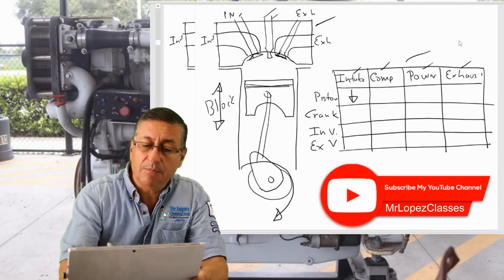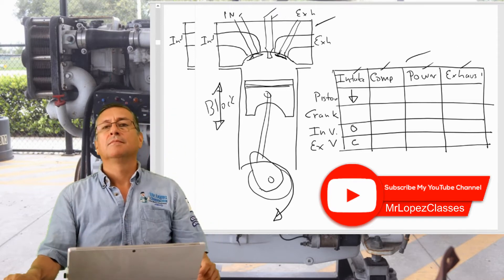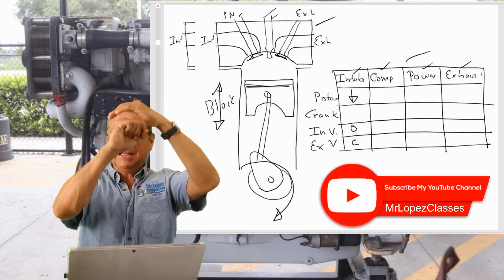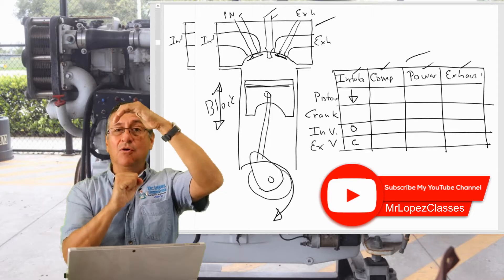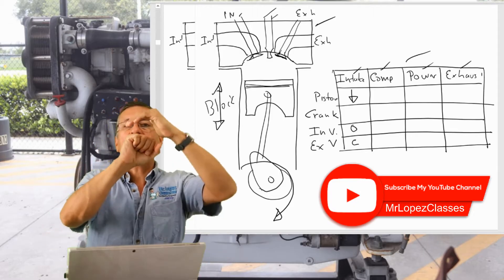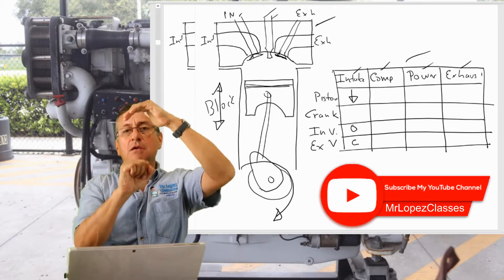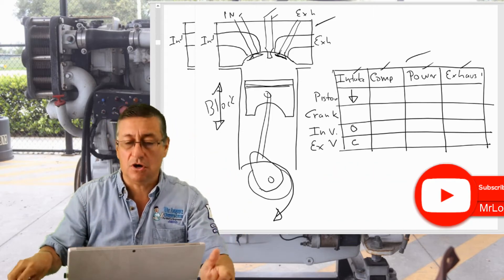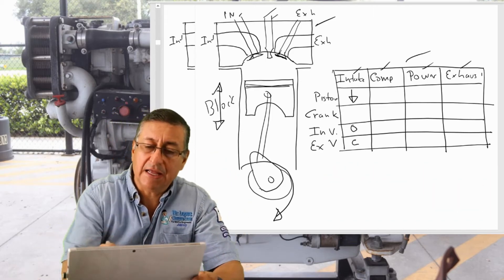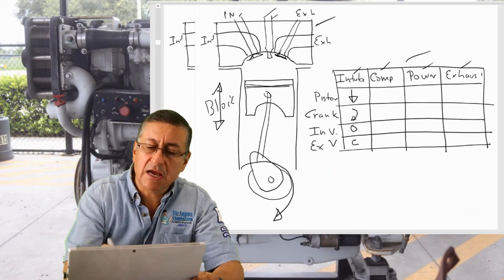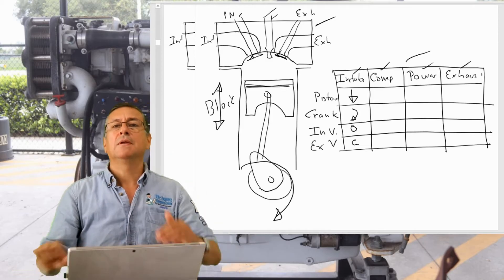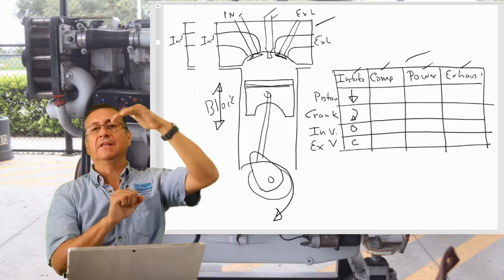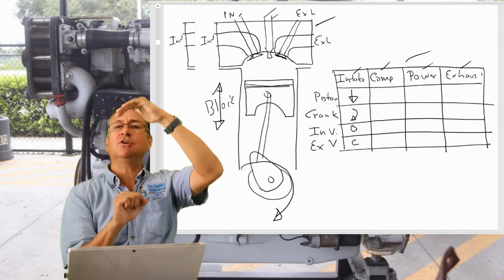During the intake, the intake valve is open and the exhaust valve is closed, and the piston is going down. The crankshaft rotates 180 degrees — a half turn. Now the piston is at the bottom.